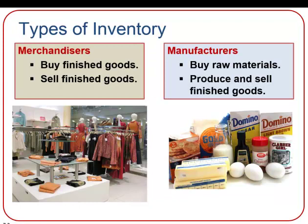There are two main types of inventory. The first one is merchandisers. Merchandising companies purchase finished goods from suppliers for immediate resale to customers. Think about Kohl's, the clothing store. Kohl's buys finished goods like shirts, pants, and shoes to sell to its customers — the same finished goods they buy are passed directly on to customers.